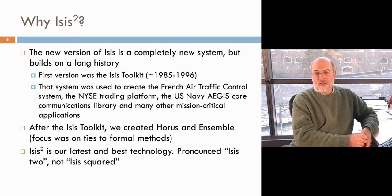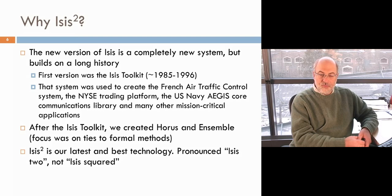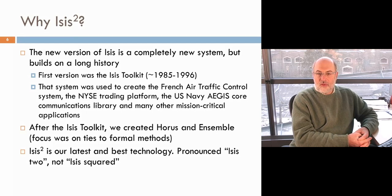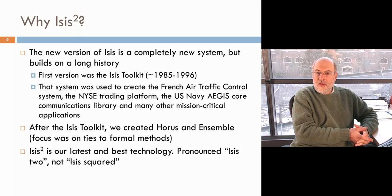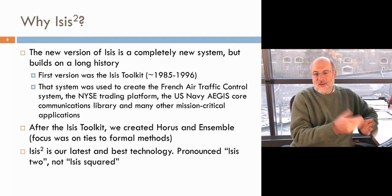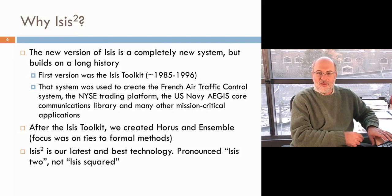We built other systems after that here at Cornell: Horus, the son of ISIS; Ensemble, a rebuild of Horus in a high-level programming language; and now this new version, called ISIS2 or ISIS squared. This new version is a revisiting of those older ideas, repackaged and rethought to integrate tightly with C-sharp and the .NET development environment. The ISIS-squared name is a kind of reference to Amazon's EC2 and S3 — but call it ISIS2.